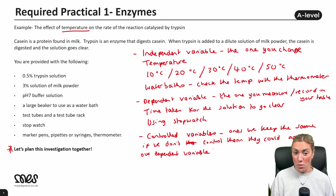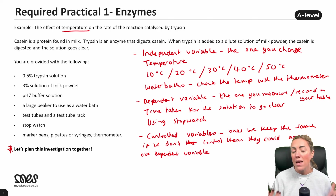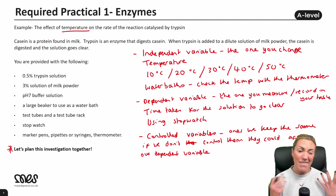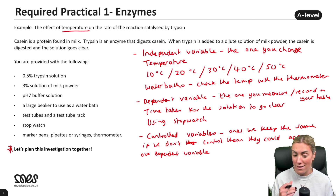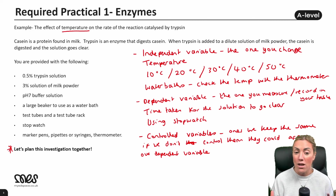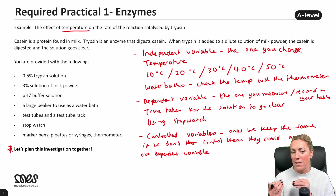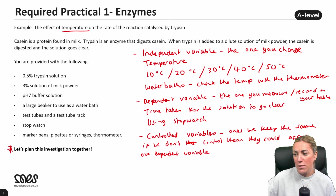In an exam question, always name the dependent variable. For this practical: if we don't control them, they will affect the time taken for the solution to go clear, and your results would not be valid. If you're changing lots of other things, how do you know it's the temperature causing those results and not something else — like pH affecting the time taken for the solution to go clear?